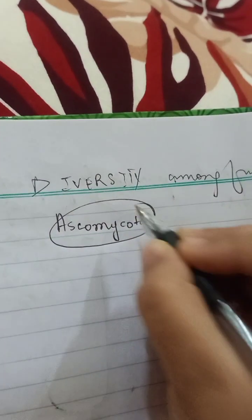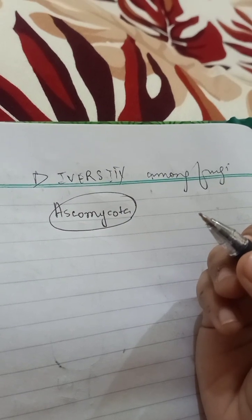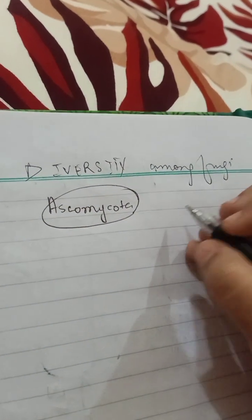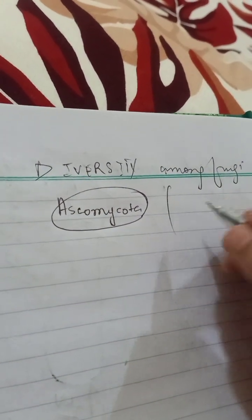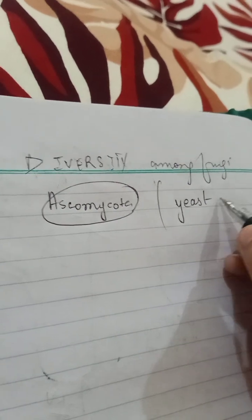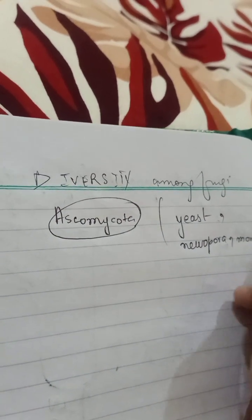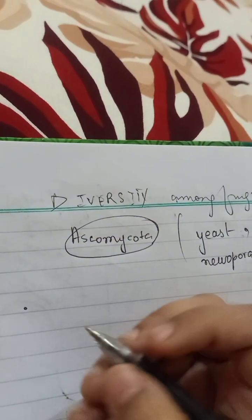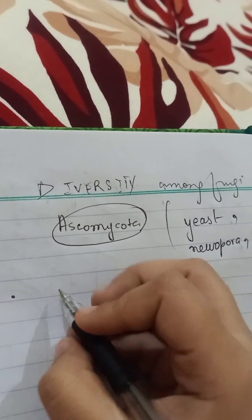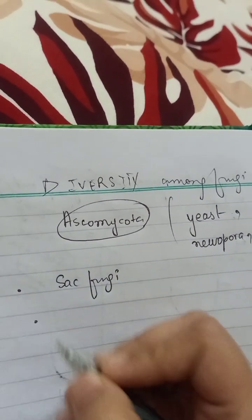Ascomycota is a group of fungi. Examples of this group include yeast, Spora, and morels. This group is commonly called the sac fungi. Let's see how these organisms basically occur by going through the cycle.